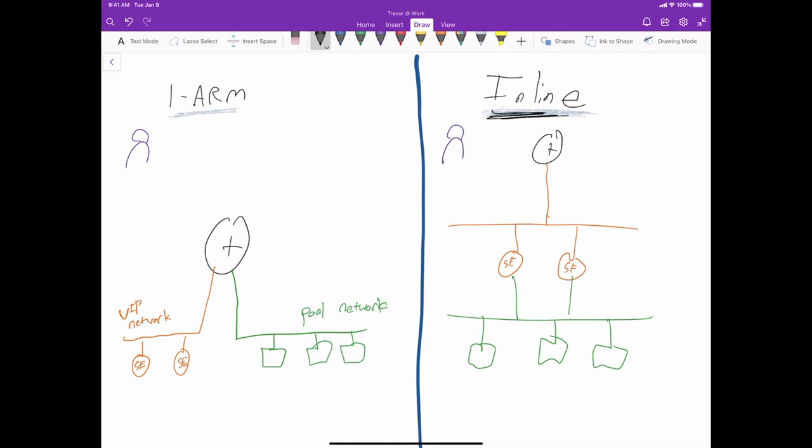Avi by default will deploy the load balancer in line. It does this because Avi is smart enough to know that maybe for example, your VIP network is in a different subnet than your pool network. And so what it will do is pretty cool. It's just going to automatically plumb the network interface cards necessary into both of those networks.